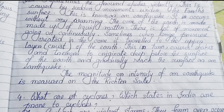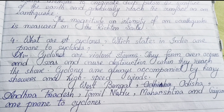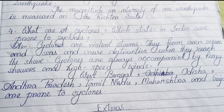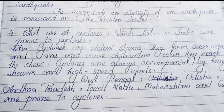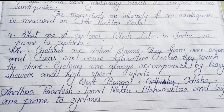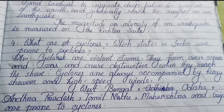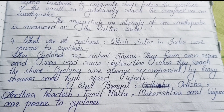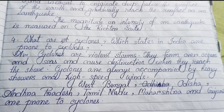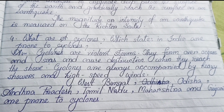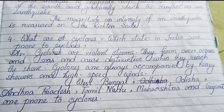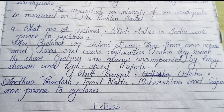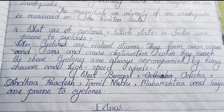The magnitude or intensity of an earthquake is measured on the Richter scale. Number four: What are cyclones? Which states in India are prone to cyclones? Cyclones are violent storms. They form over oceans and seas and cause destruction when they reach the shore. Cyclones are always accompanied by heavy showers and high-speed winds. West Bengal, Odisha, Andhra Pradesh, Tamil Nadu, Maharashtra, and Gujarat are prone to cyclones.